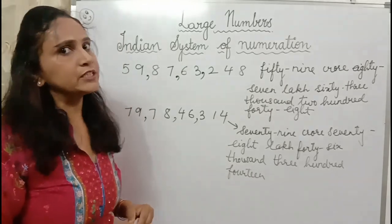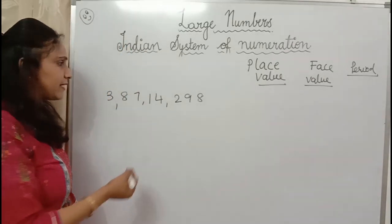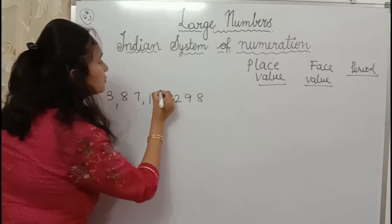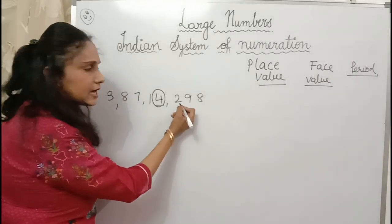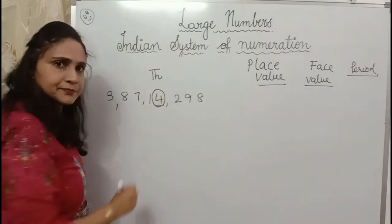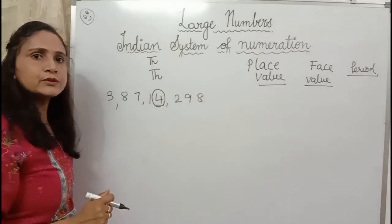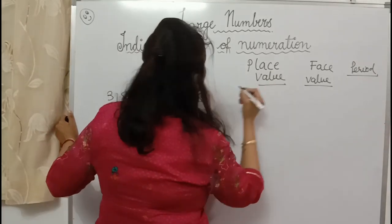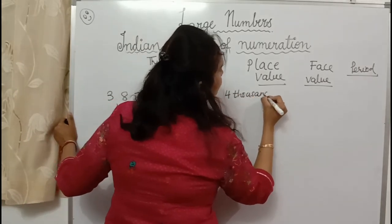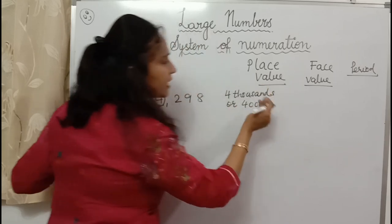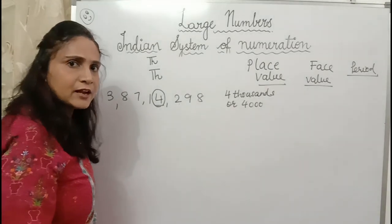Now let's proceed to place value, face value, and period. We are going to learn how to find the place value, face value, and period of a particular digit. Suppose I have this number and I have to find the place value, face value, and period of the digit four. First we check its place: ones, tens, hundreds, thousands — this number is at thousands place. The period is thousands.